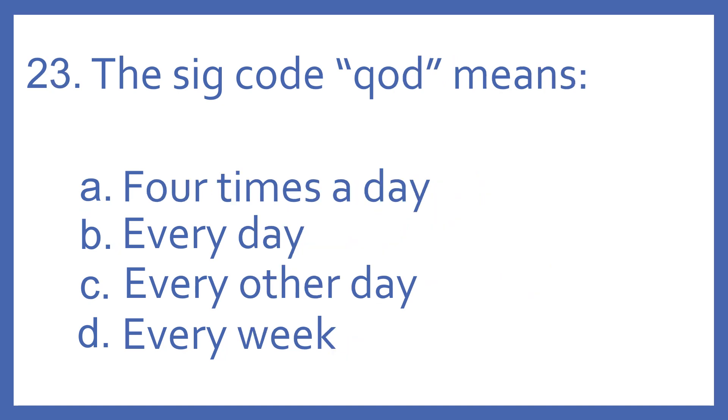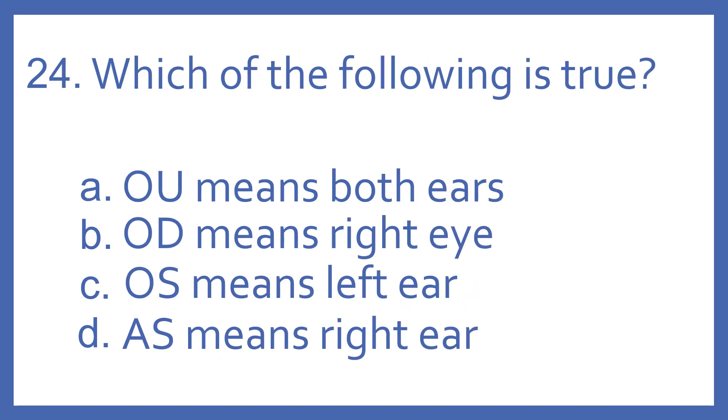Number 23, the SIG code QOD means A, four times a day. B, every day. C, every other day. Or D, every week. And the answer is C, every other day. QOD means every other day. Four times a day is QID. Every day is QD. And every week is QWK.